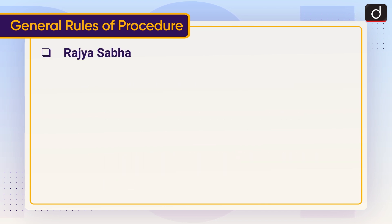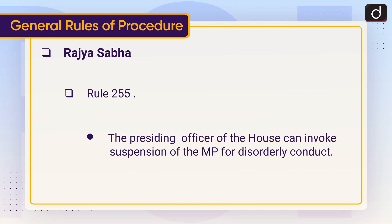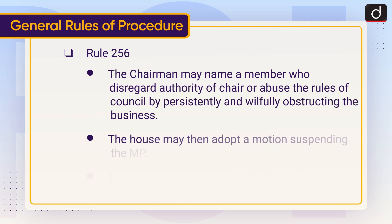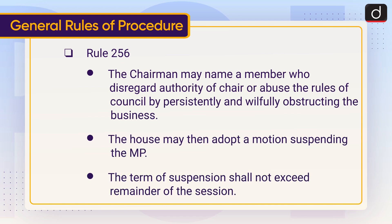Rajya Sabha Rule 255: the presiding officer of the house can invoke suspension of an MP for disorderly conduct. Rule 256: the Chairman may name a member who disregards the authority of the chair or abuses the rules of the council by persistently and willfully obstructing the business. The house may then adopt a motion suspending the MP; the term of suspension shall not exceed the remainder of the session.